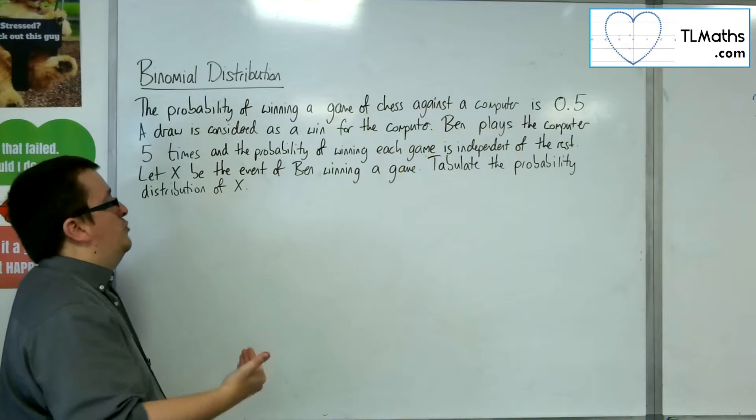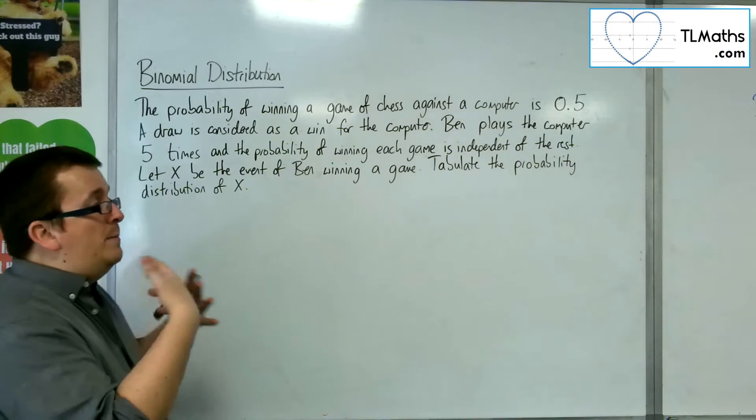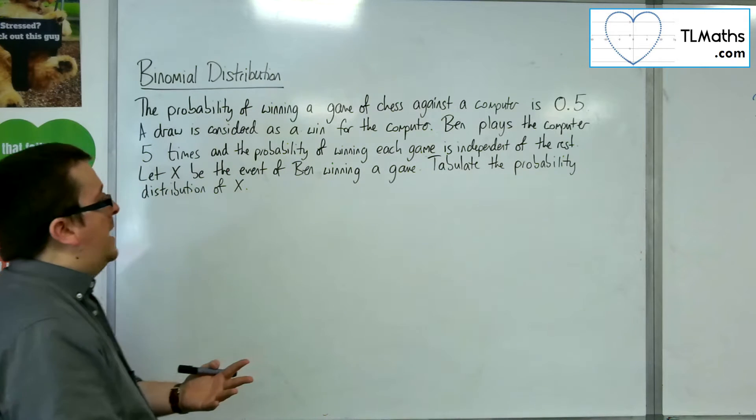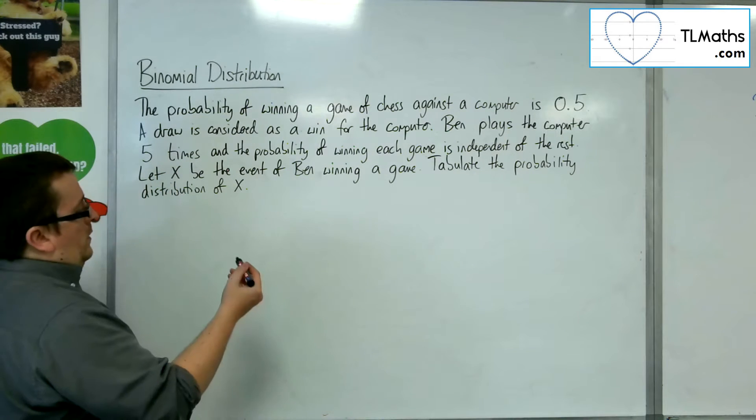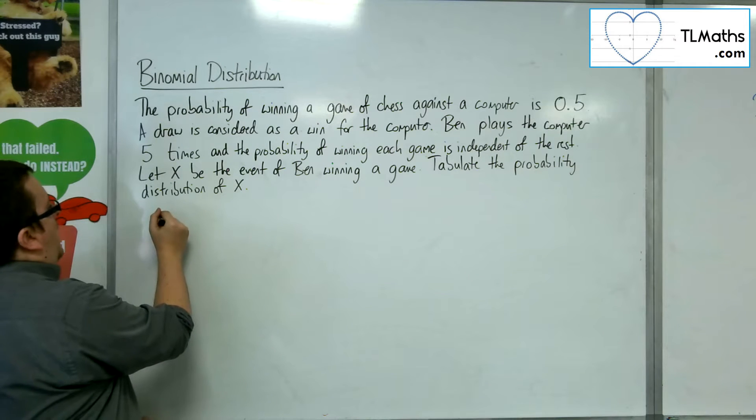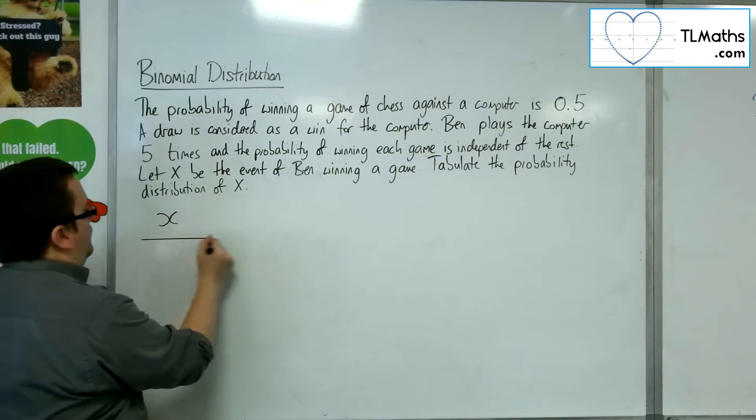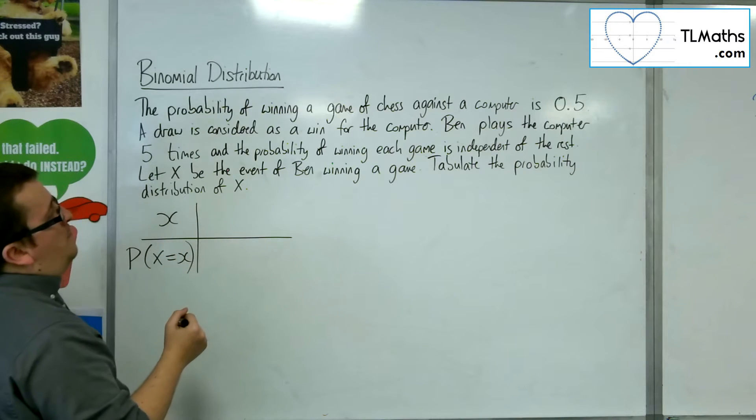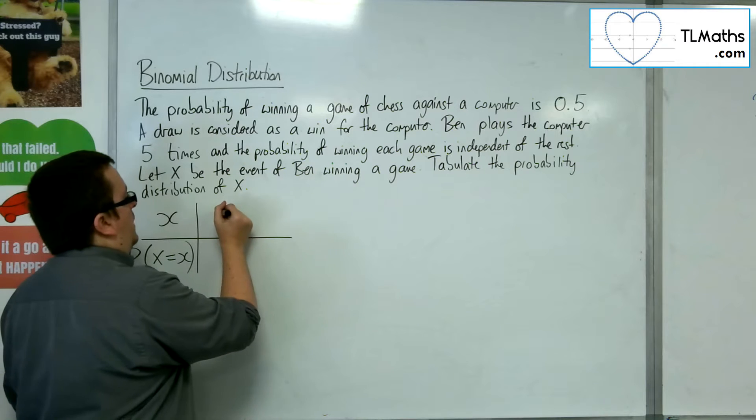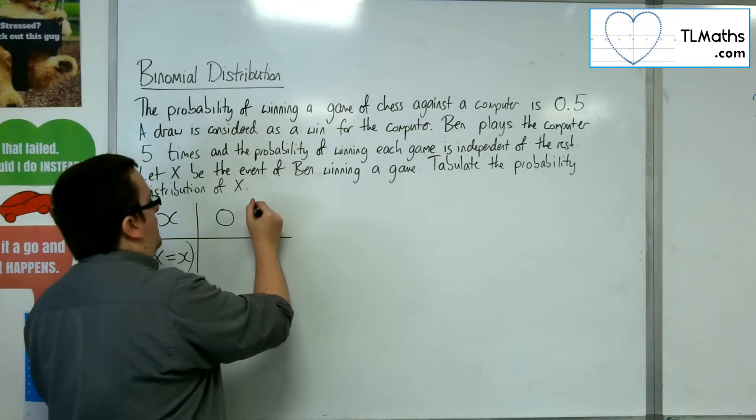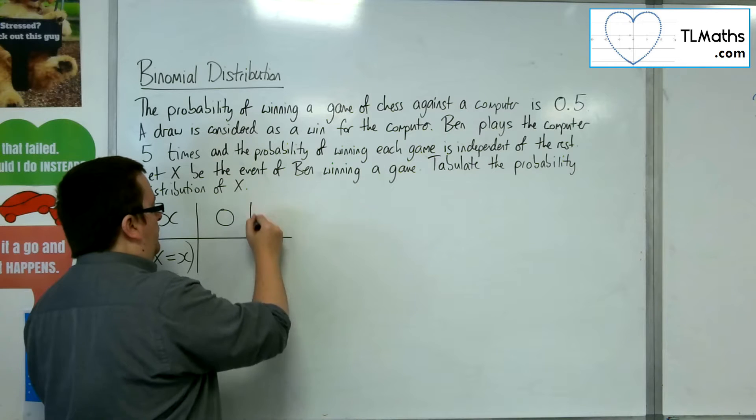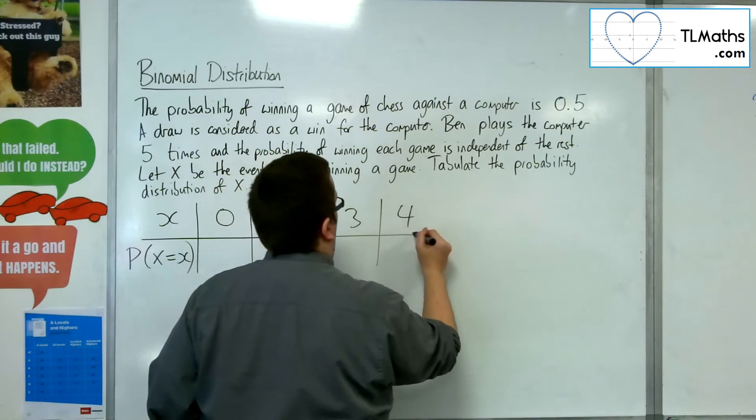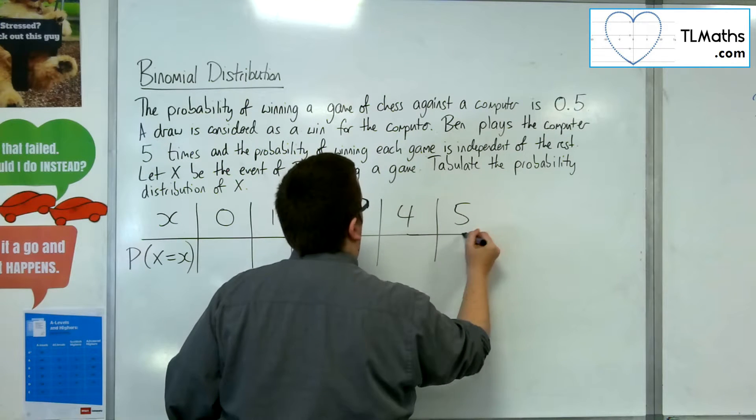Tabulate the probability of the distribution of X. So I'm going to tabulate it and then we're going to draw a stick graph, much like what we did at the very beginning of discrete random variables. So let's go straight in with this: X and then the probability of X being equal to x. So Ben can either lose all the games, or he can win a game, or he can win two games, or three, or four, or five.